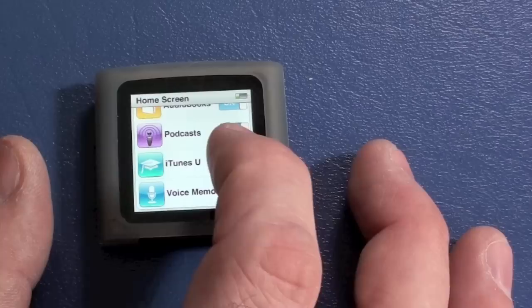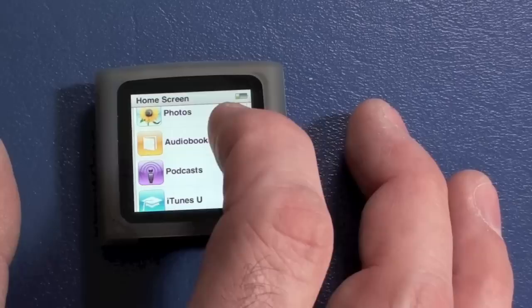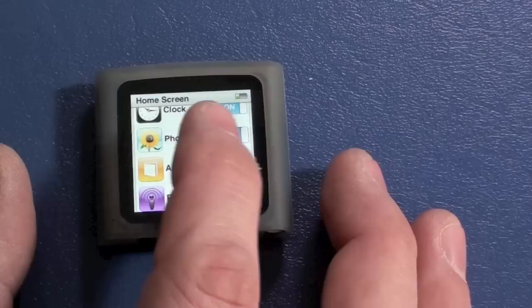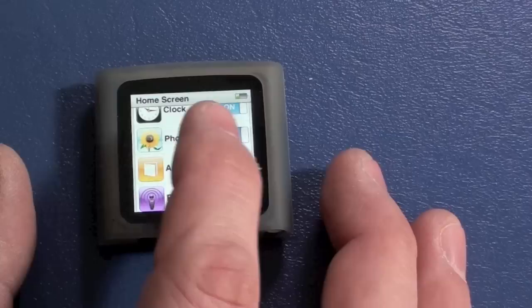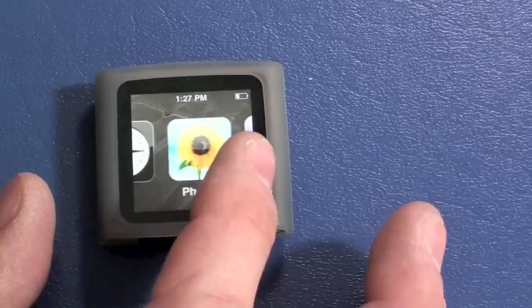You know, I don't need iTunes U. Turn that off. I don't need voice memos. I'm not going to do audio books. And I'm probably not going to waste space synchronizing photos on this. This is strictly, I don't know. I'll tell you what. I'm going to leave photos on here. So, there we go. Now, you could swipe back to get to the main screen, or you could just put your finger here, hold it, and you'll go back to your main screen. And you could see how that fitness icon is now gone.